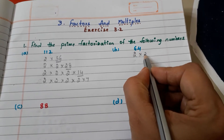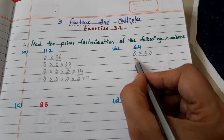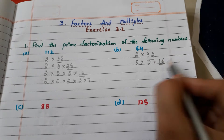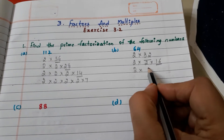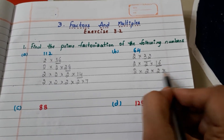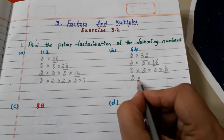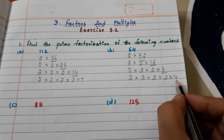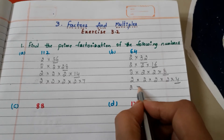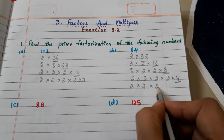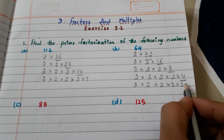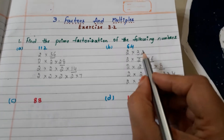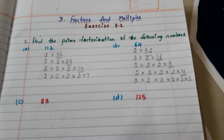Now let us go to the number 64. How we can write it? 2 into 32. Now 32 as 2 into 16. Now 16 as 2 into 8. We can write 8 as 2 into 4. And 4 as 2 into 2. If we multiply all these 2s, we will get the number 64 again.